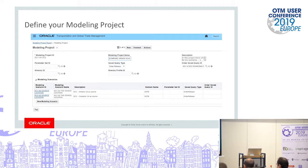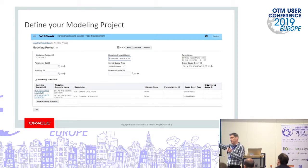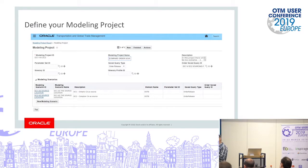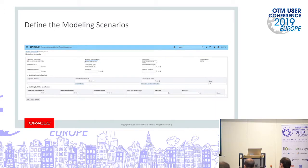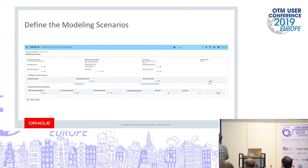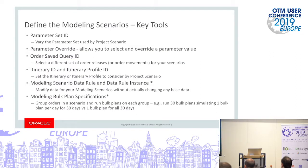This is what my project looks like for my simple test of two different distribution centers: DC one versus DC two. When you're doing these simulations you'll have a lot of them, so it's important to have meaningful IDs so you understand what each simulation was for. I have two scenarios — DC one as the source location, and DC two as the source location — and when I run this project it creates two bulk plans and runs them for those two different sources.